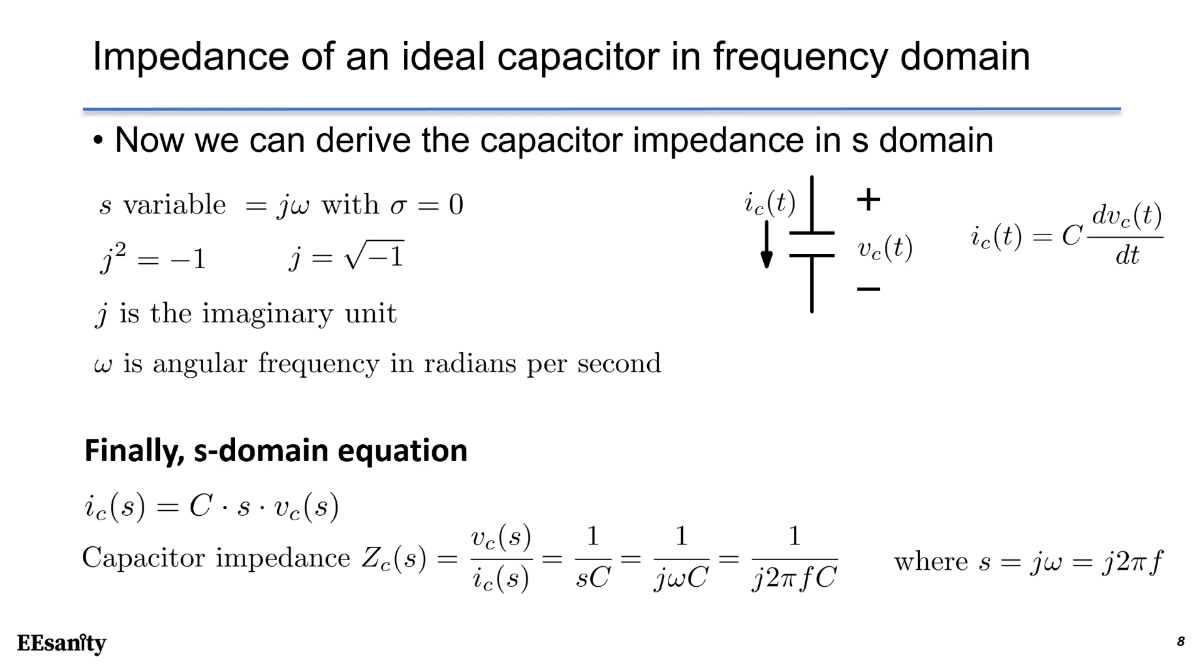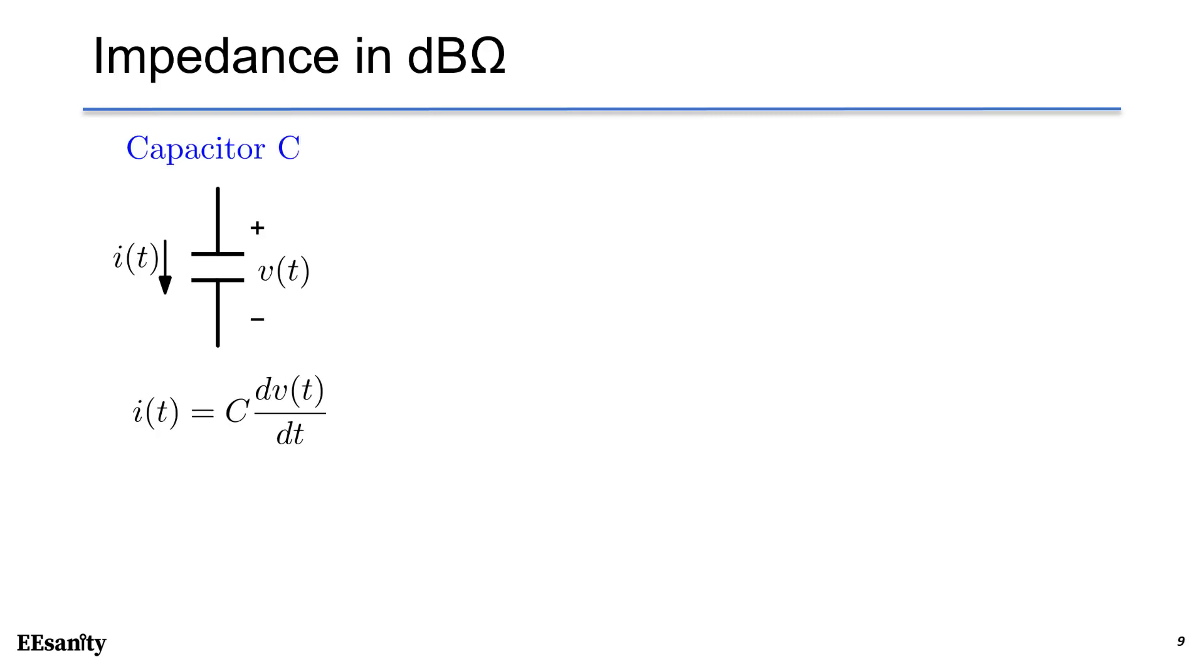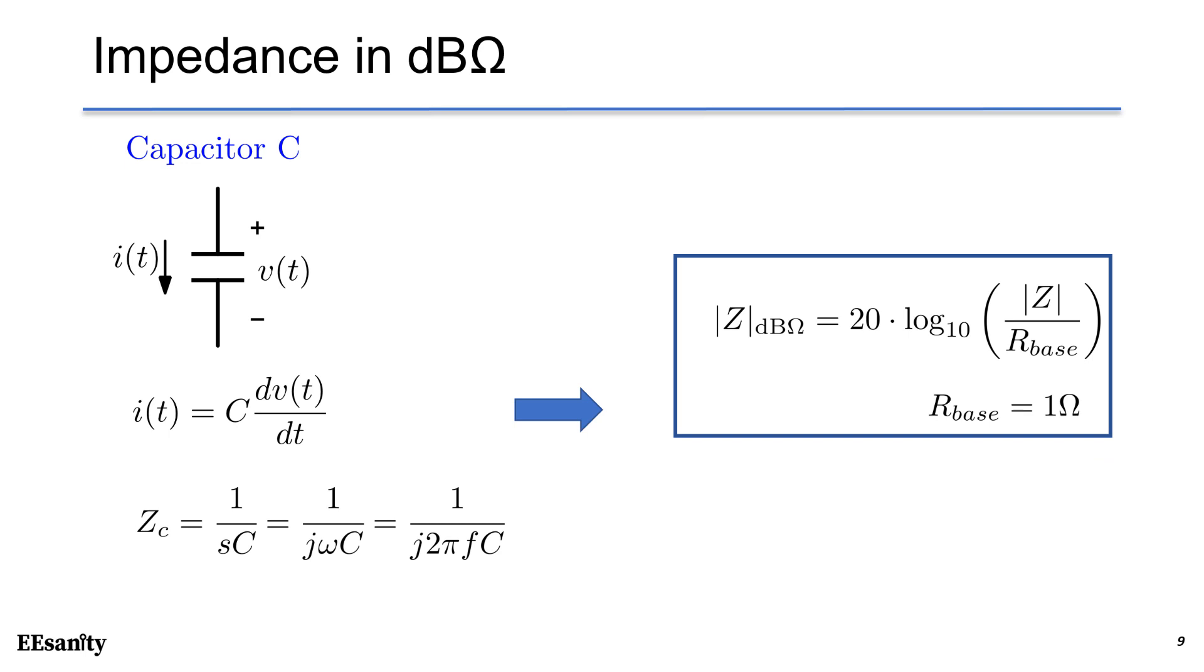The capacitor impedance is found as voltage over current equals to 1 over SC. Notice that S is j omega, omega equals to 2 pi times F. F is the frequency in Hertz. Impedance is expressed in dB ohm in the Bode plot of impedance graph. This equation has been introduced in the previous lectures. We can use R base as 1 ohm and convert impedance into dB ohm using the equation as shown here.